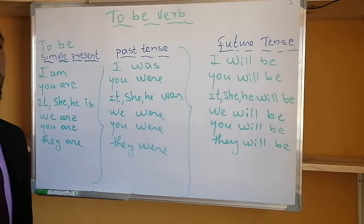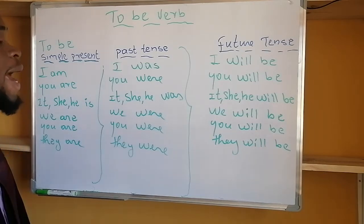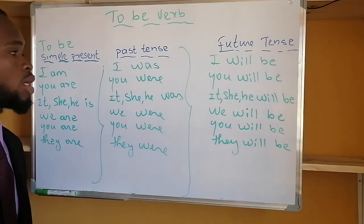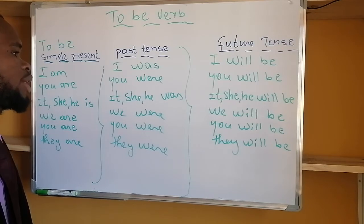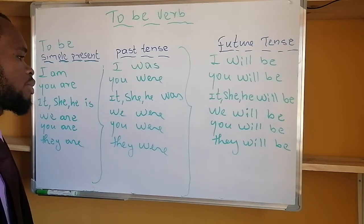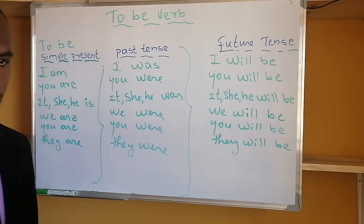Now, past tense: I was, you were, she was, we were, you were, they were.